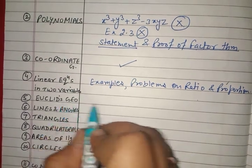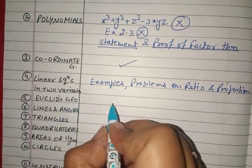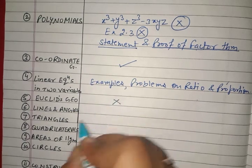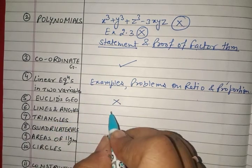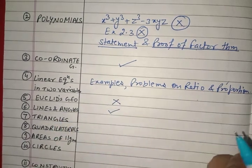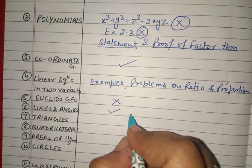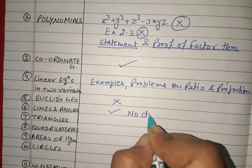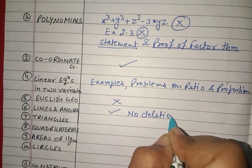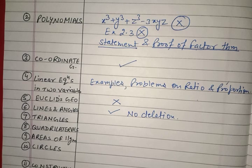Chapter 5, Euclid's Geometry, is deleted completely. Chapter 6, Lines and Angles, you need to do it completely — nothing is deleted in this chapter.